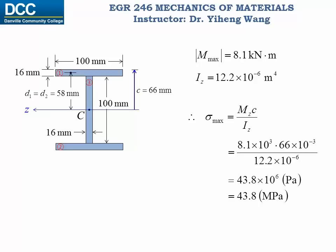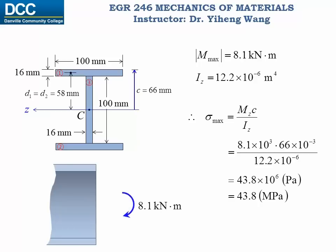We represent the linear stress distribution on the cross-section. From the bending moment diagram, this bending moment is negative, meaning the bending is downward. Therefore, above the centroidal axis the stress is tensile, and below the centroidal axis the stress is compressive. The absolute maximum bending stress occurs at the extreme fiber, and this completes the problem.